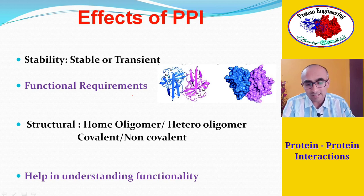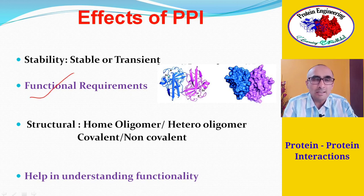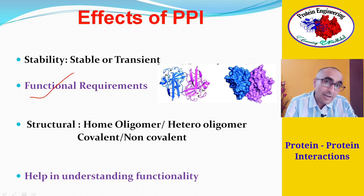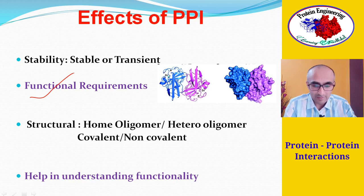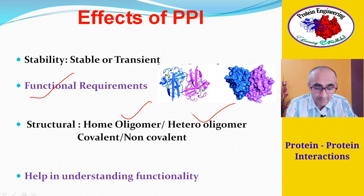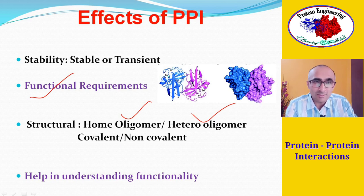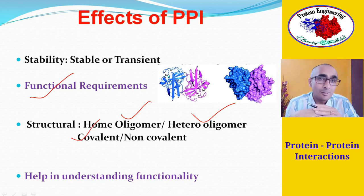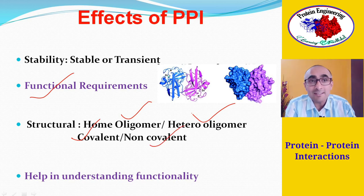Due to protein-protein interaction, there is a functional requirement: most proteins, in order to perform their function, require interaction with other proteins. Based on structural organization, a protein could be a homo-oligomer — same polypeptides associating together — or a hetero-oligomer, where different polypeptides associate. The oligomer could also be covalent, such as through a disulfide bond between protein molecules. In most cases, however, proteins interact through non-covalent forces like ionic interactions and van der Waals forces, forming non-covalent oligomers.